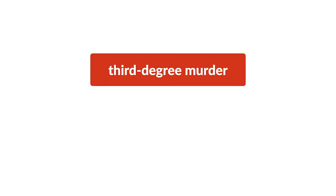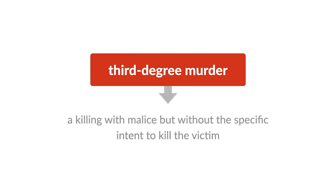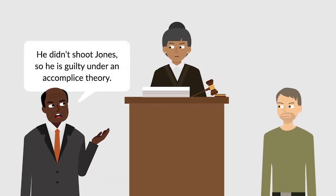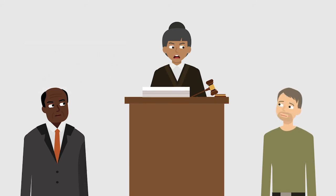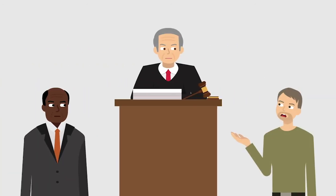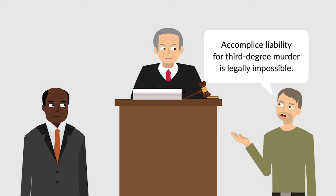Roebuck was charged with crimes including third-degree murder, defined as a killing with malice but without the specific intent to kill the victim. Because Roebuck wasn't the one who shot Jones, the prosecution argued that Roebuck was guilty under an accomplice theory. The trial court convicted Roebuck after a bench trial, and Roebuck appealed, arguing that accomplice liability for third-degree murder is legally impossible.